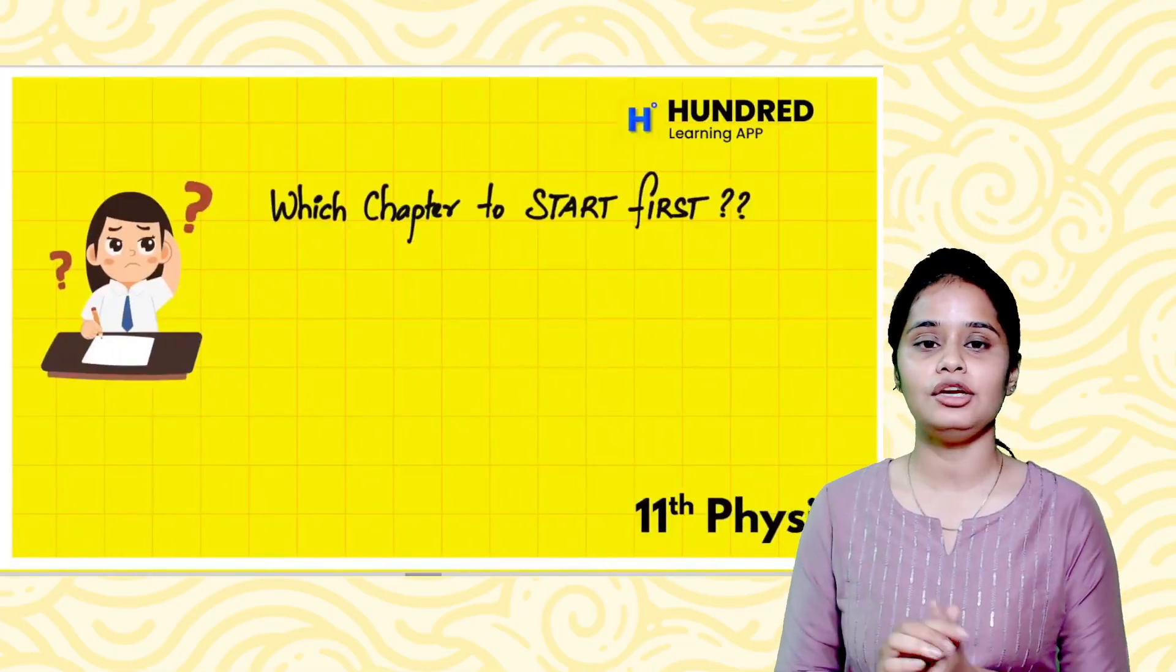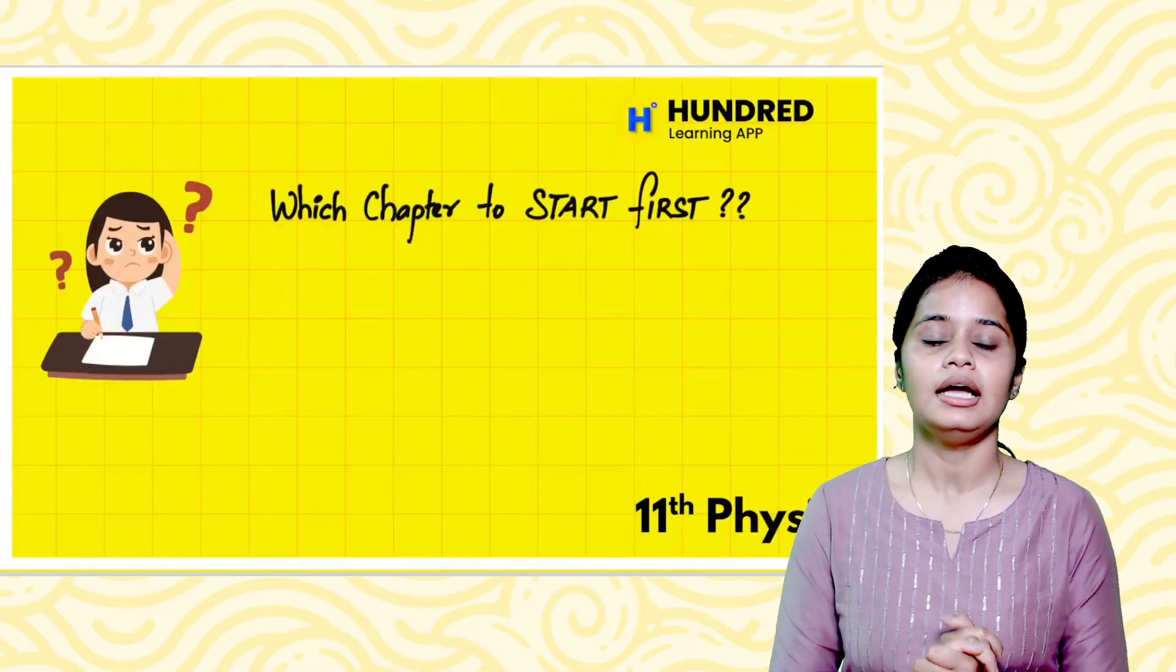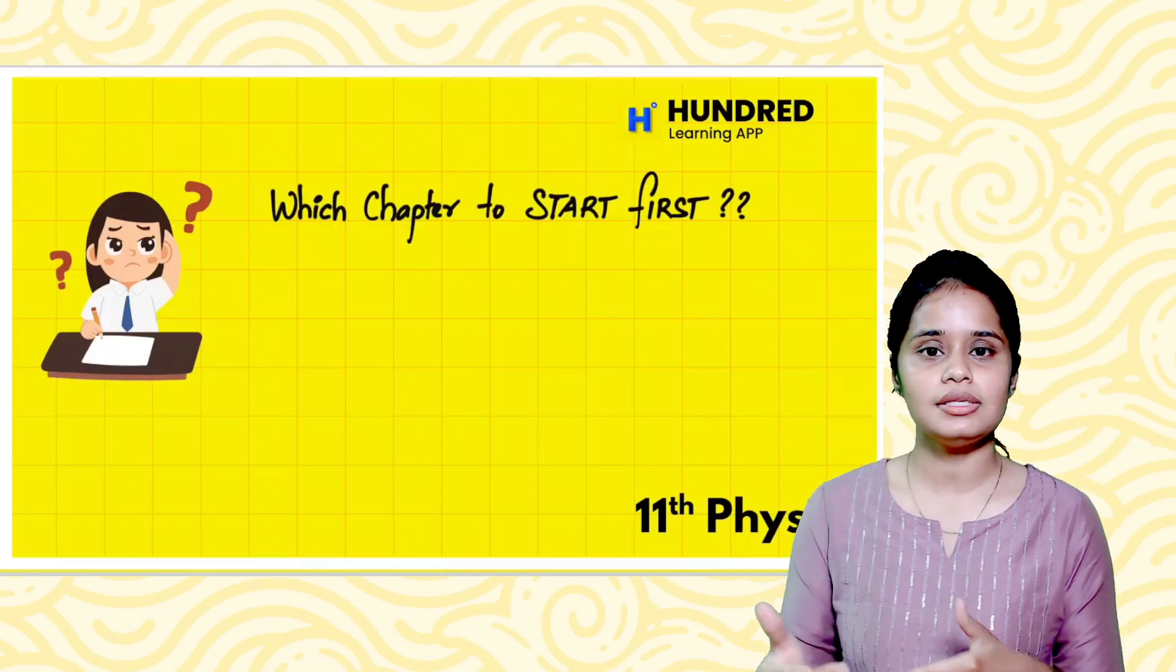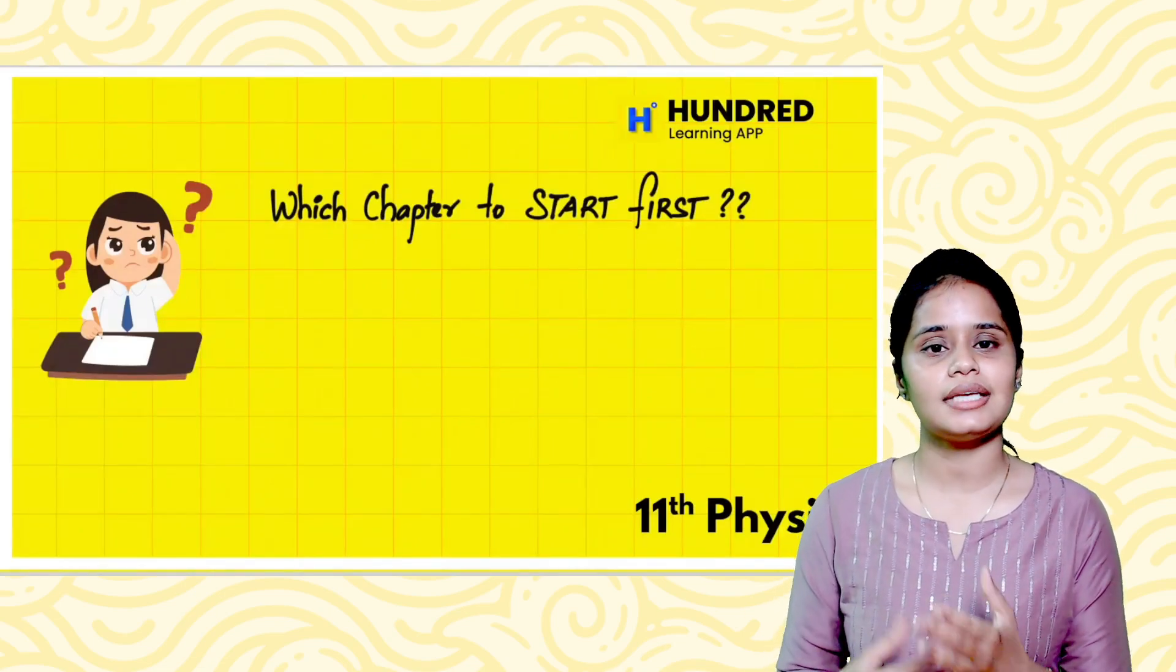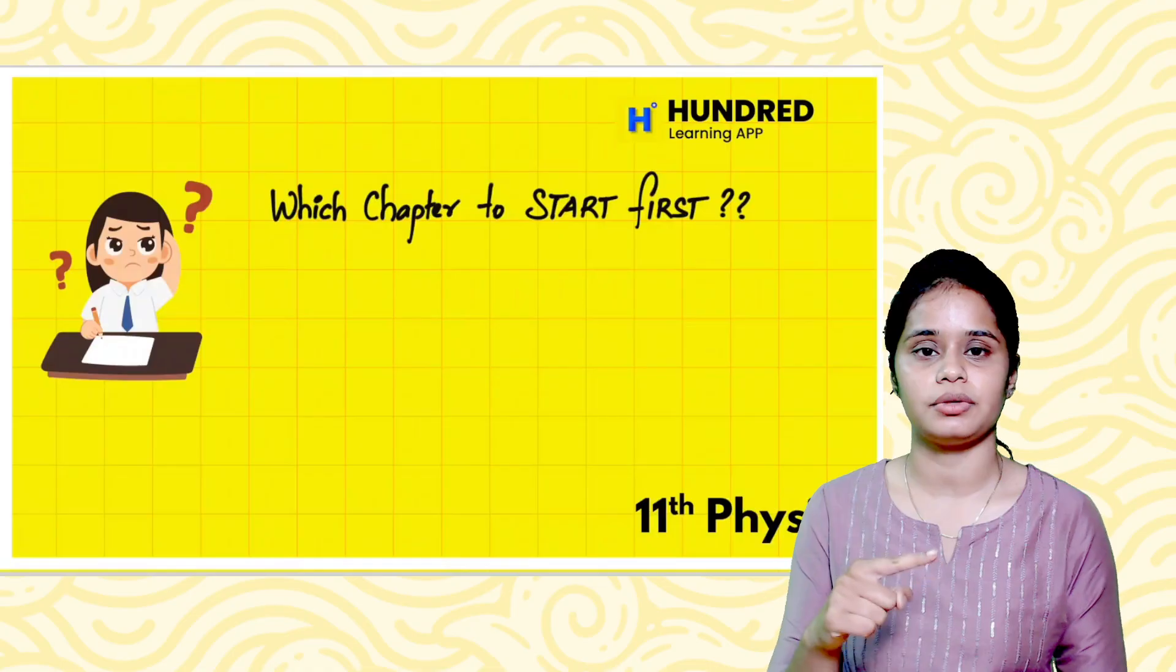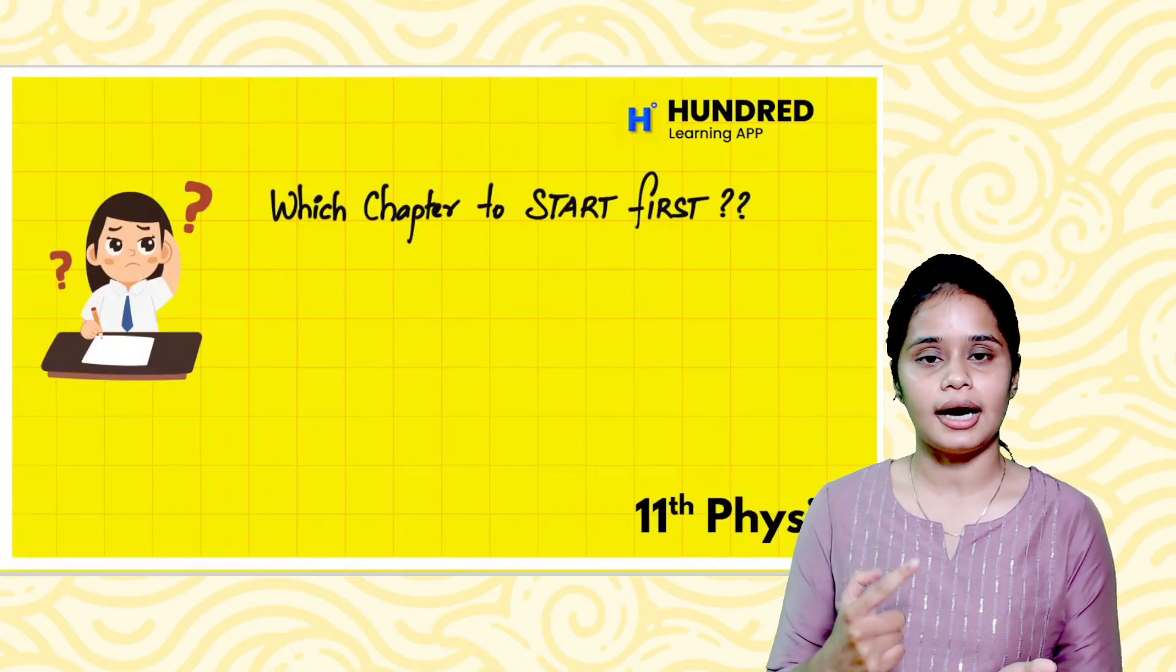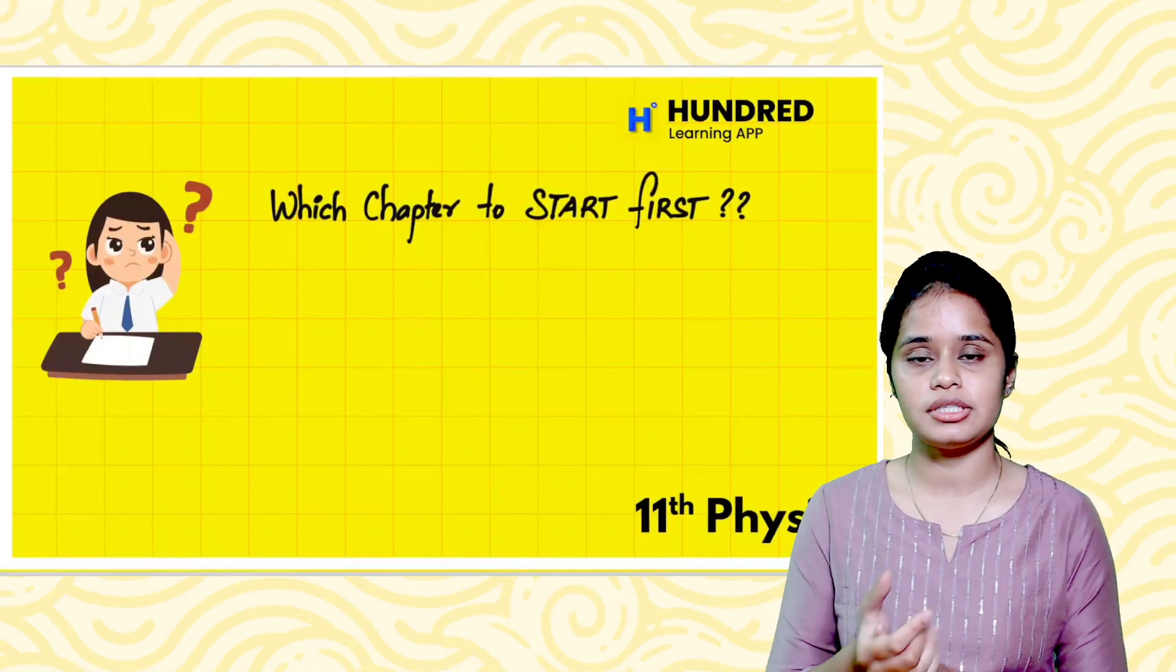So which chapter should you start first? The first priority chapters are 2, 3, and 4: Kinematics, Laws of Motion, and Motion of System of Particles with Work, Energy, Power. Among these three chapters, the first priority is...